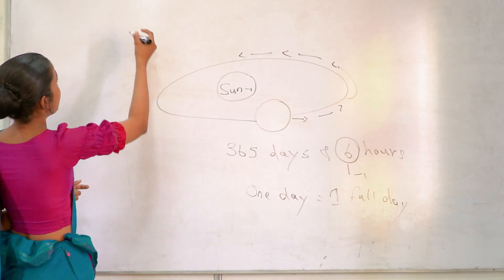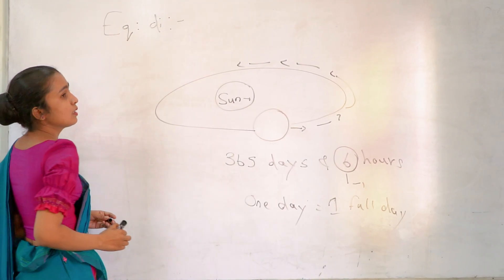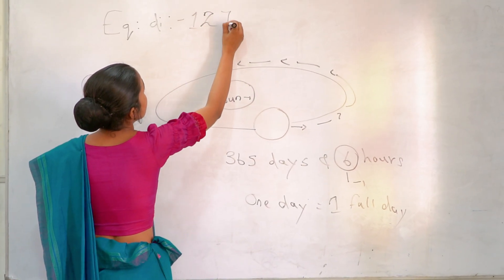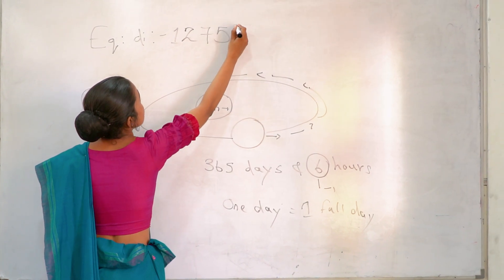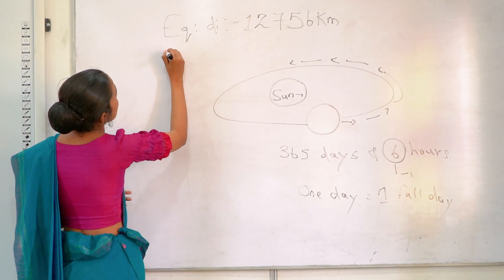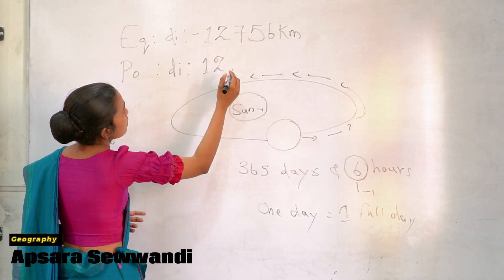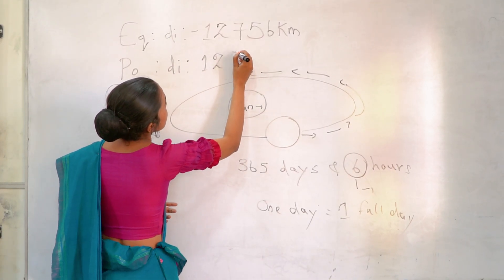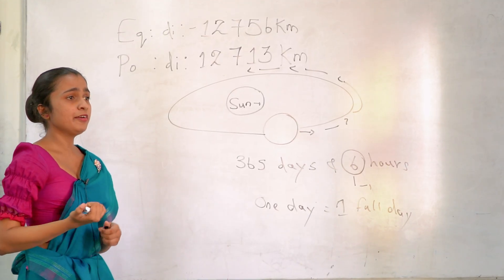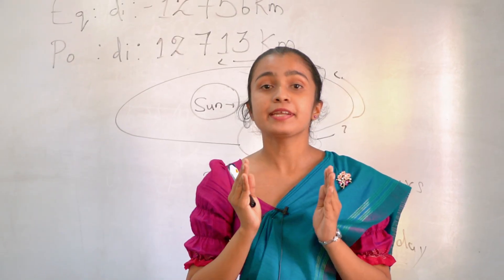So there is something called equatorial diameter. This equatorial diameter is 12,756 kilometers. And next one, polar diameter. Polar diameter means 12,713 kilometers. The surface area of the Earth is 510 million kilometers.